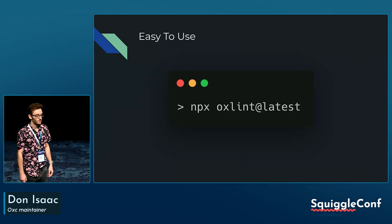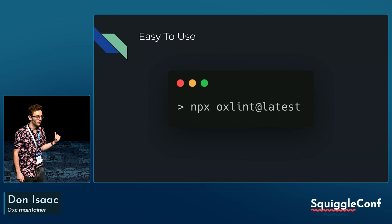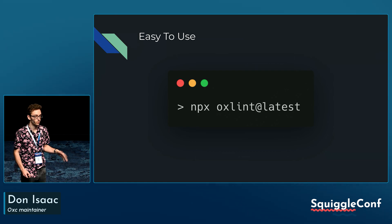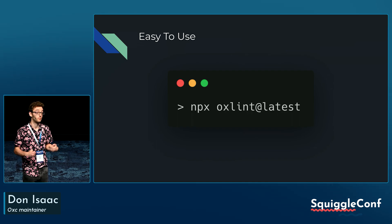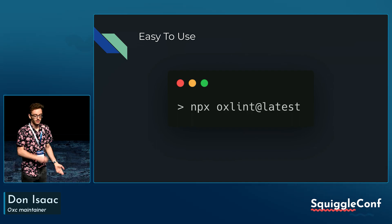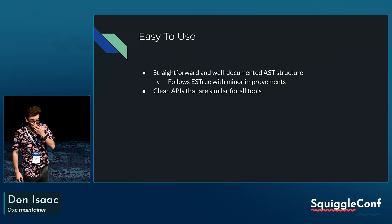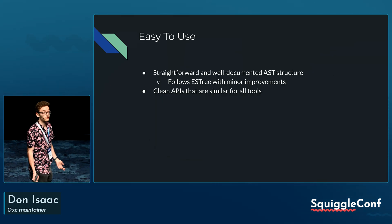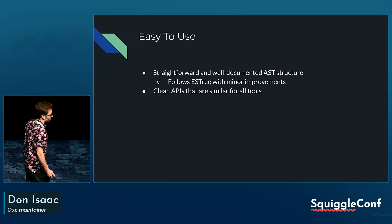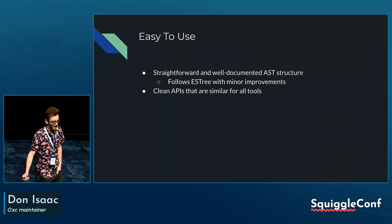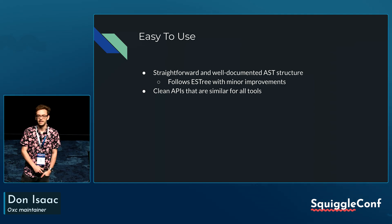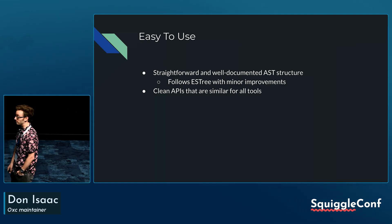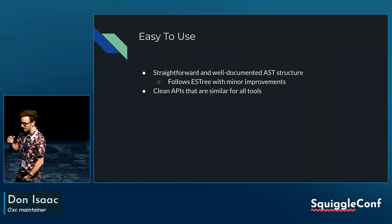They're also pretty easy to use. You can just stick our linter right before you run ESLint. There's a plugin for ESLint that will disable the rules we support, so you can kind of just run it for free. If you want to use our parser or transformer in your own dev tooling projects, they're also very easy to use. The AST is very well documented and looks like ESTree, with a few enhancements.